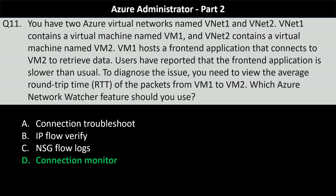Let's understand why the other options are incorrect. Connection troubleshoot helps diagnose connectivity issues by checking reachability between a source and destination, and can determine if a connection is blocked by a network security group, user-defined routes, or other configurations. IP flow verify checks if traffic is allowed or denied between a source and destination address and port, primarily used for verifying security group configurations. NSG flow logs capture information about IP traffic flowing through network security groups, focusing on security and traffic flow analysis.